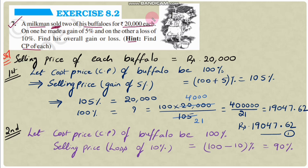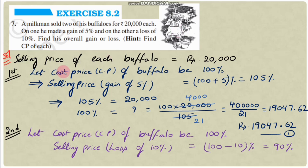Solution: Selling price of each buffalo = 20,000 rupees. For the first buffalo, let cost price = 100%. Since there is a 5% gain, selling price = 100 + 5 = 105%. So 105% = 20,000 rupees; we need cost price = 100%.